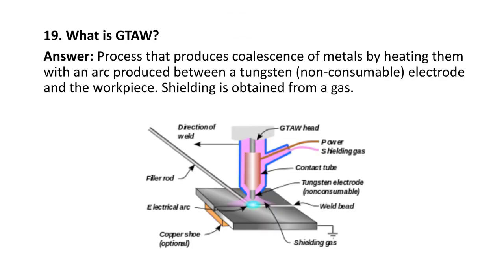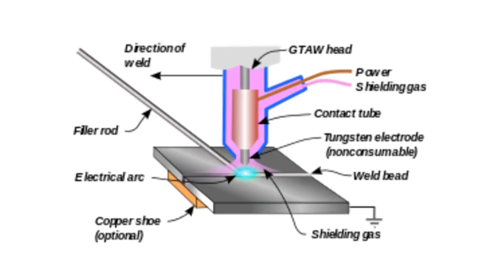Next question: what is GTAW? It is a process that produces coalescence of metals by heating them with an arc produced between a tungsten — non-consumable — electrode and the workpiece. Shielding is obtained from an external gas, typically an inert gas. Here you can see the schematic of GTAW with the arc produced between the tungsten electrode and the workpiece.